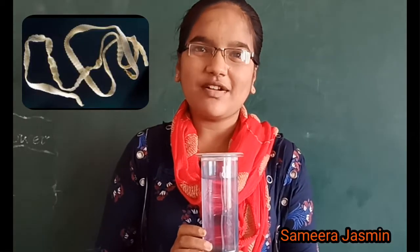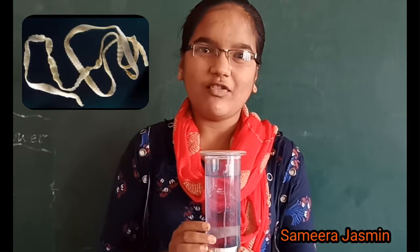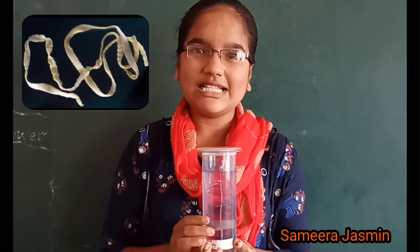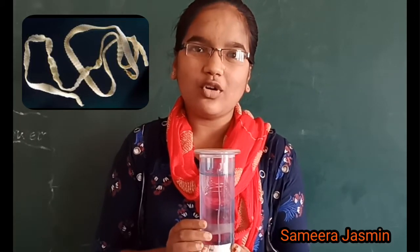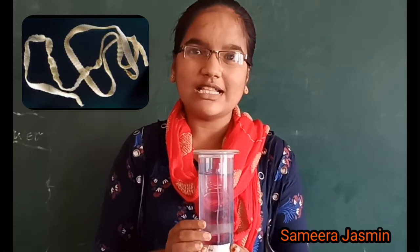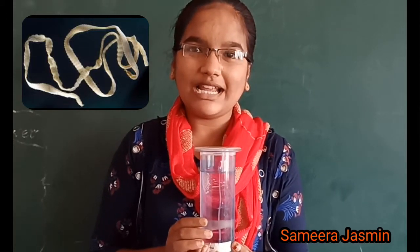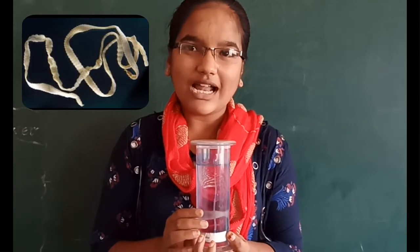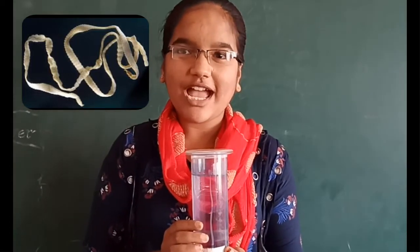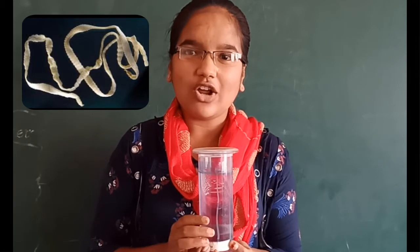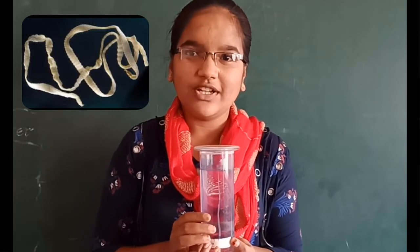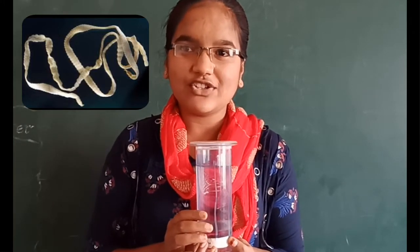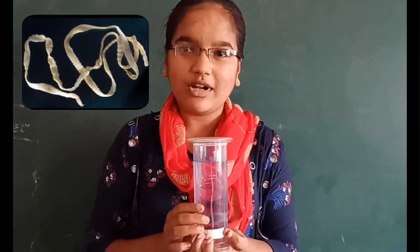Jai Gurudev, everyone. My name is Samira. I am from 9th class. My topic is Platyhelminthes. The body of animals in this group is far more complexly designed than in the two other groups we have considered so far. The body is bilaterally symmetrical, meaning the left and the right half of the body have the same design. There are three layers of cells from which different tissues can be made. That is why such animals are called triploblastic.